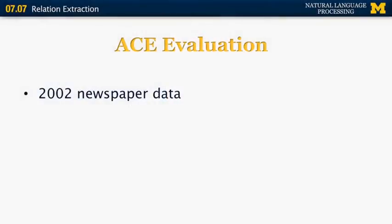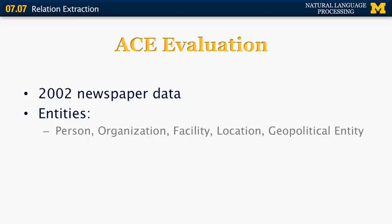This leads me to another evaluation that was used in the early 2000s, mostly following MUC. It's the so-called ACE evaluation for automatic content extraction evaluation. The task was to use a set of newspaper articles from 2002 and to identify all the entities that belong to the following categories: person, organization, facility, location, and geopolitical entity. And also to identify all the relations between those entities. For example, things like role, part, located, near, and social.